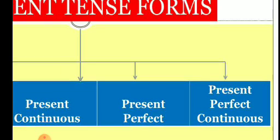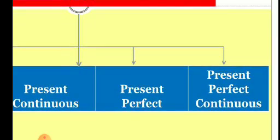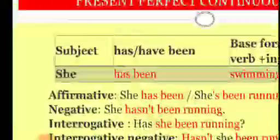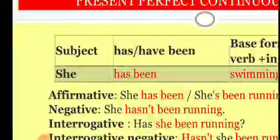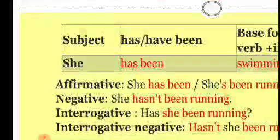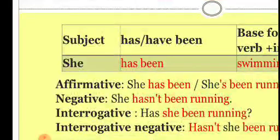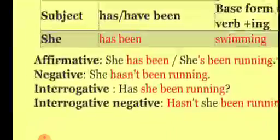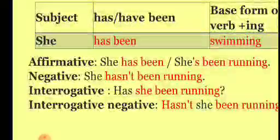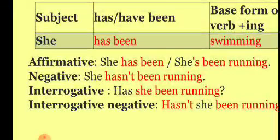Likewise, for present perfect continuous tense, the structure is: subject plus has/have been plus base form of verb plus -ing. For example: She has been running.